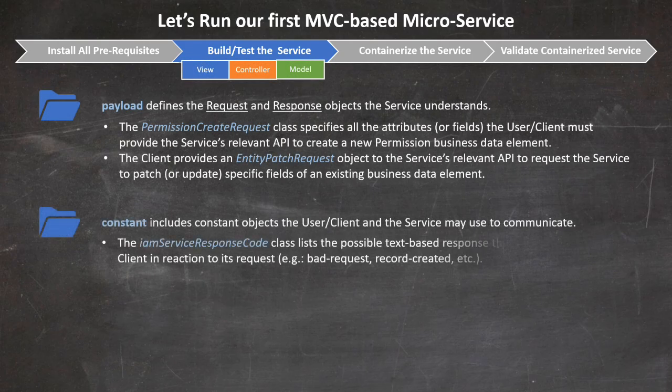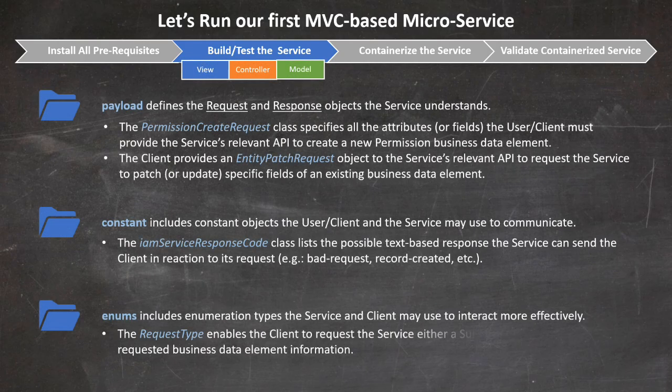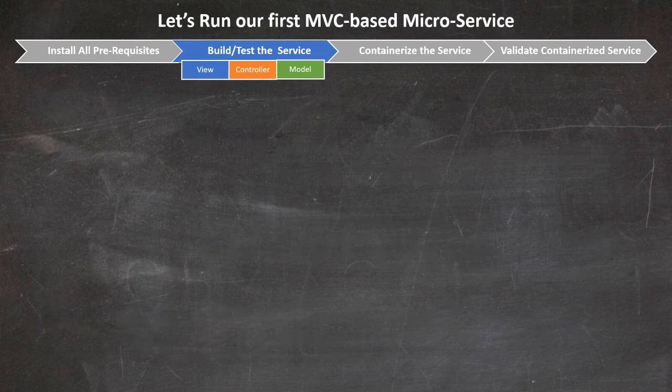In this example, the model is implemented through three sets of folders. The payload defines the request and response objects that our microservice and clients use to communicate. The constants and enums are supporting classes that provide a common dictionary for our service and its clients to engage in meaningful interactions. We then move to the controller, which is implemented in the controller folder.